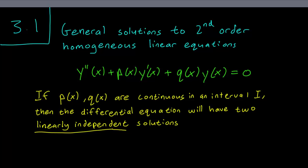First, we make the assertion that if the terms p(x) and q(x) in this equation are continuous on an interval I, then the differential equation will have two linearly independent solutions in I.